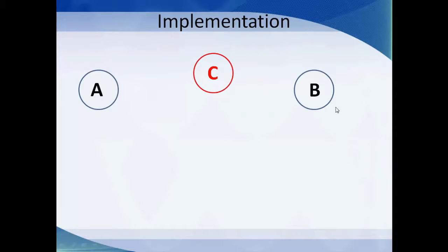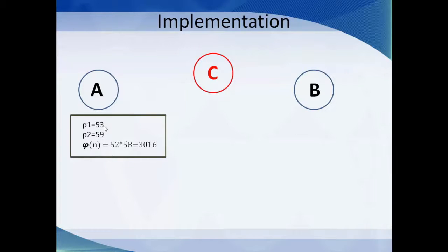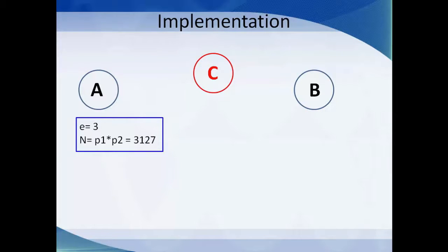We have two parties A and B and want to transmit information from B to A, with C as the intruder. We take two prime numbers p1 = 53 and p2 = 59 on A's side — small two-digit numbers, while real implementations use 350–400 digits. We calculate φ(n) = (53−1) × (59−1) = 52 × 58 = 3016. We keep this aside for decryption later. We design a public exponent e = 3, and n = p1 × p2 = 3127. Since e is odd and has no common factors with φ(n), we transfer e and n to B.